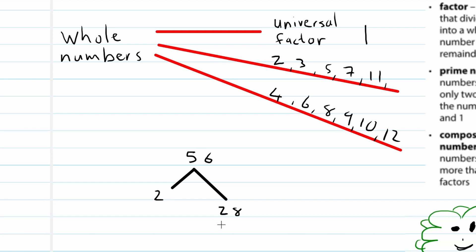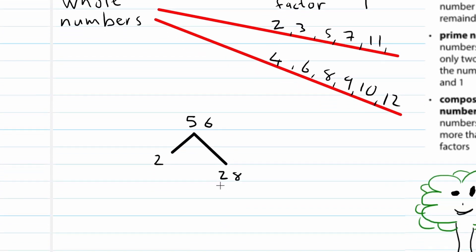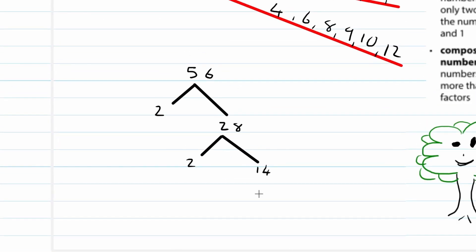We repeat the process. Can we divide 28 by 2? Yes — it becomes 14. Can we divide 14 by 2? Yes — it becomes 7. Is 7 a prime number? Yes it is. So 56 has now been divided into its prime factors using a factor tree.